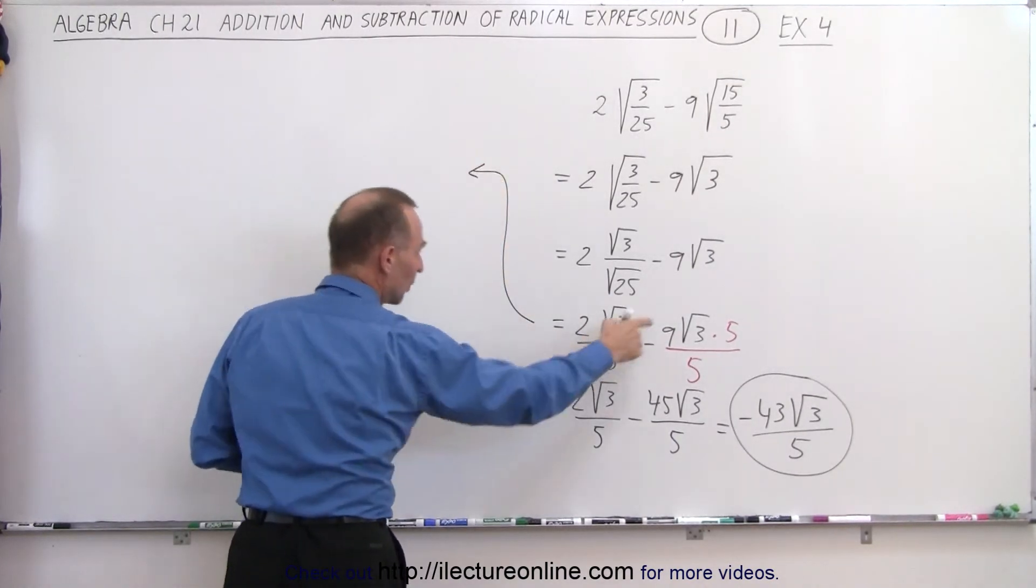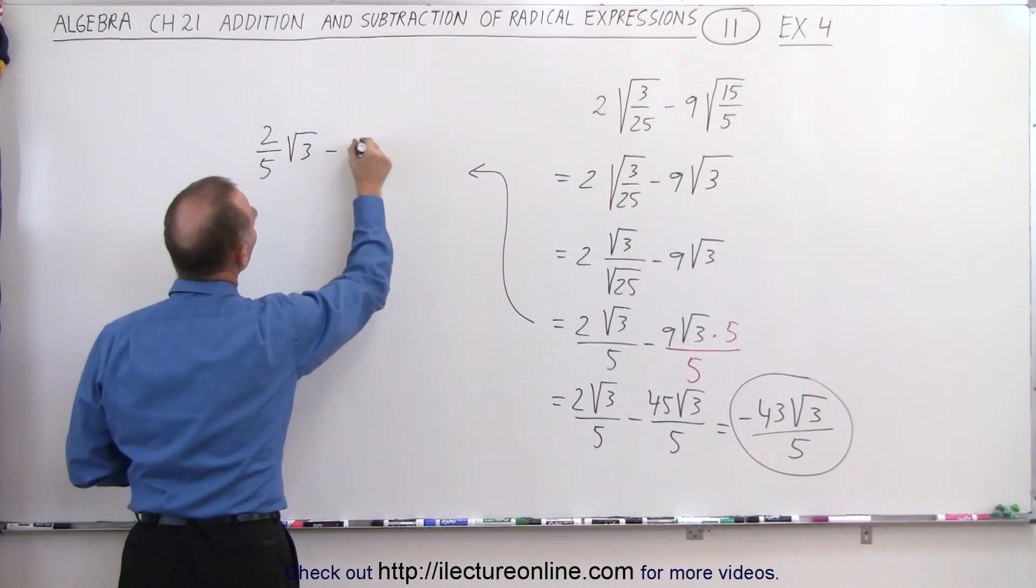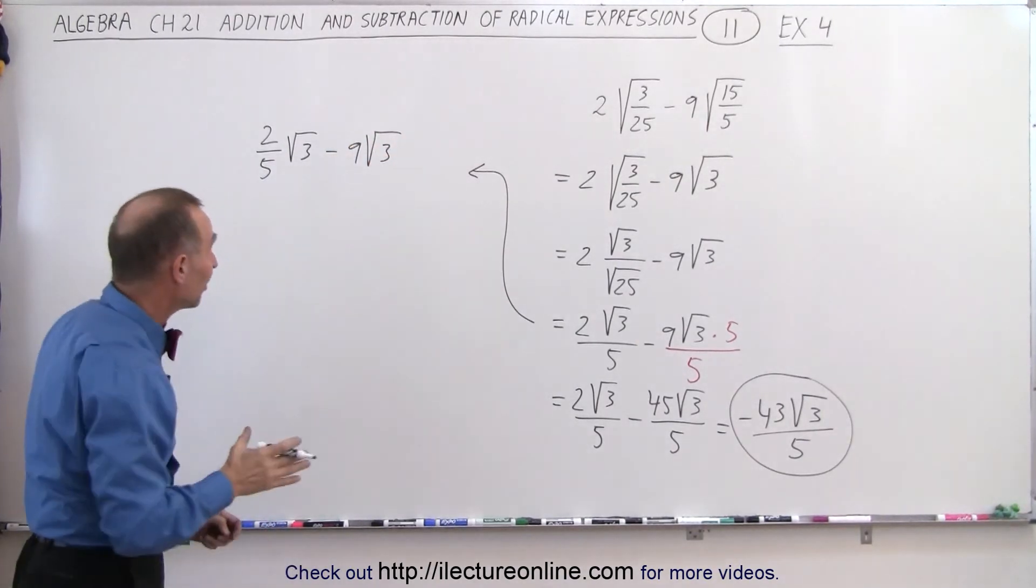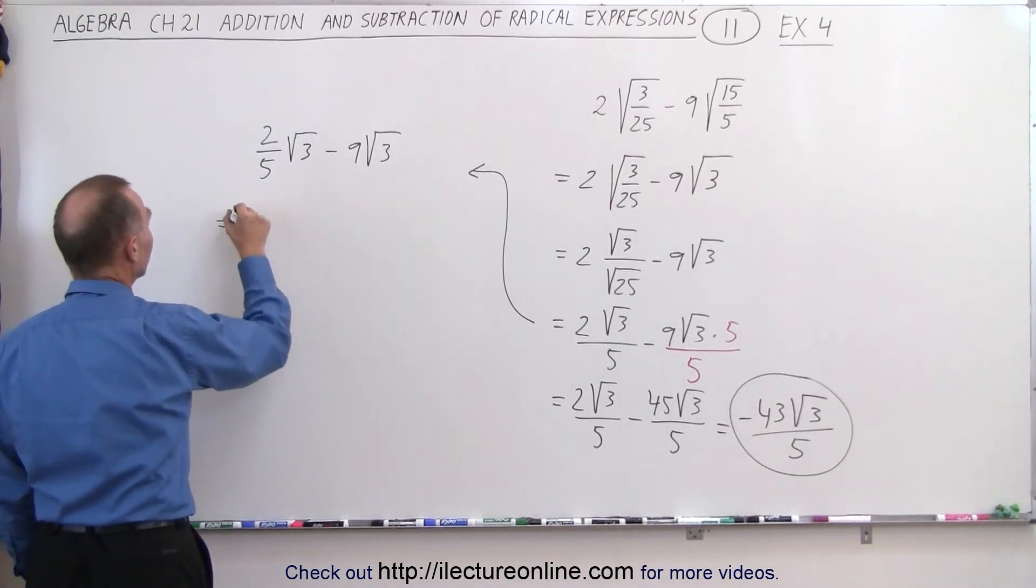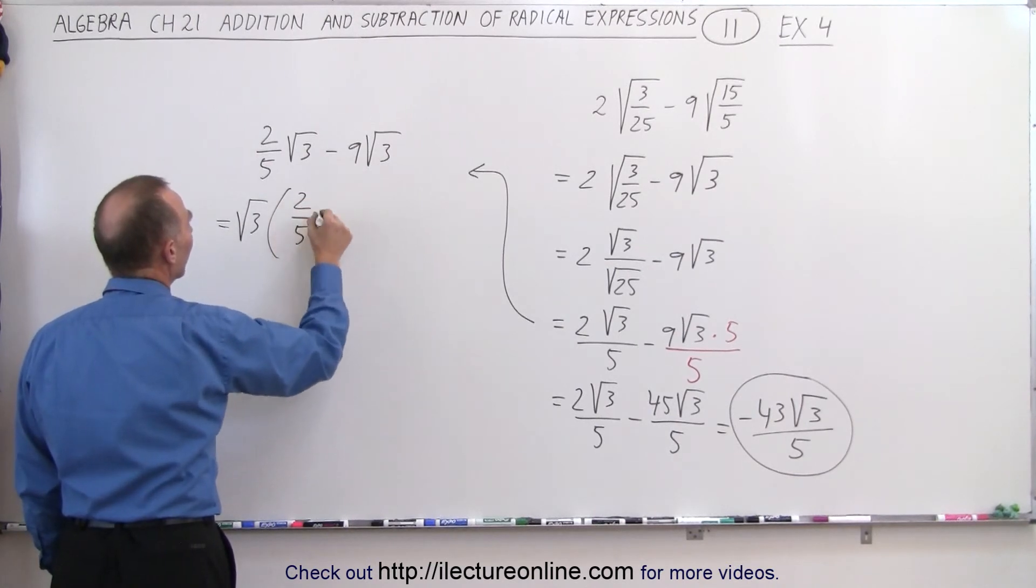Let's come up here and rewrite what we had. We had 2/5 times √3 and minus 9√3. What we could have done is simply factored out √3. So we can do that.